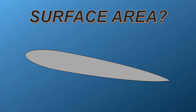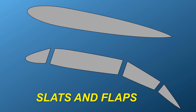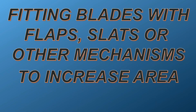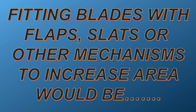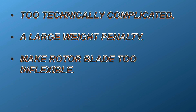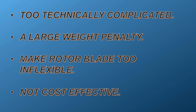What about the surface area of the blade? In an aeroplane, we can artificially increase the surface area of a wing by extending flaps and slats. This in turn increases the lift produced from the wing at a given speed. However, fitting blades with flaps, slats, or other mechanisms to increase area would be too technically complicated, a large weight penalty, make rotor blades too inflexible, and would not be cost effective. Therefore, changing the surface area would not be viable or possible.